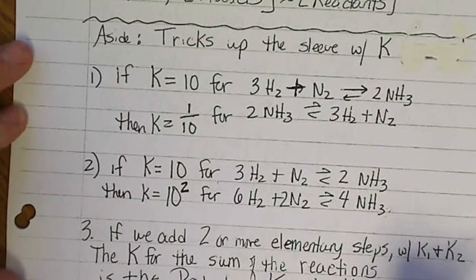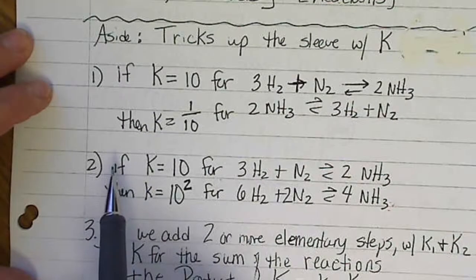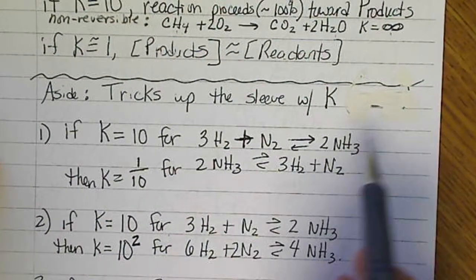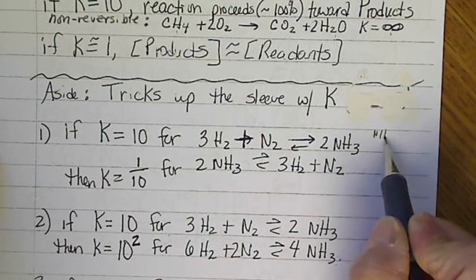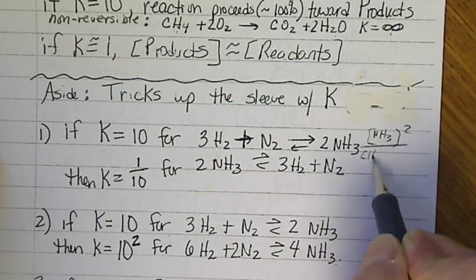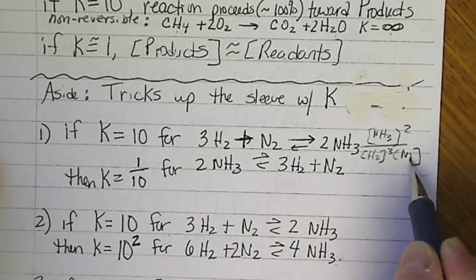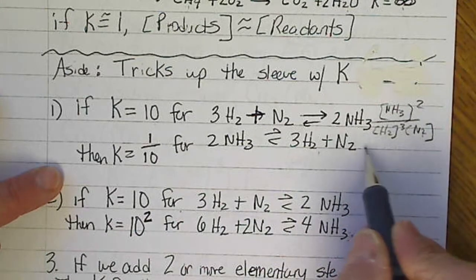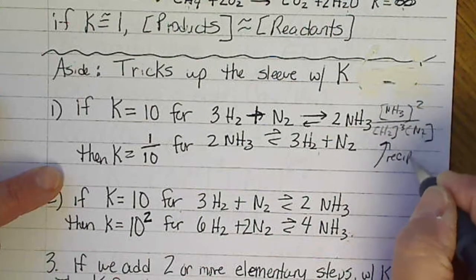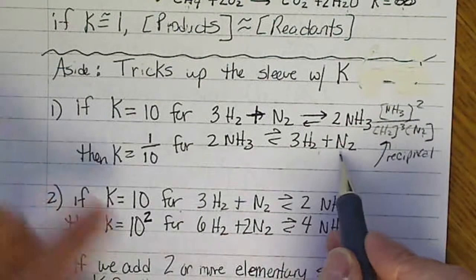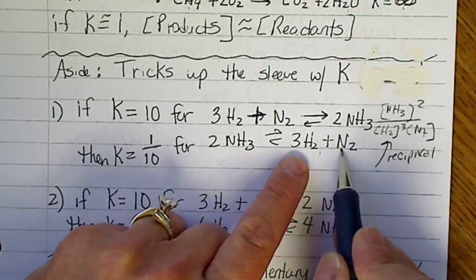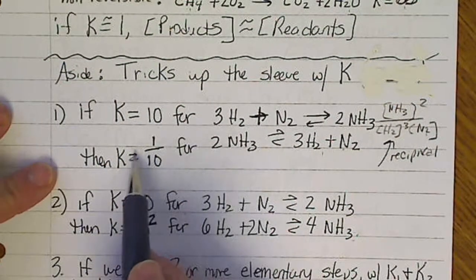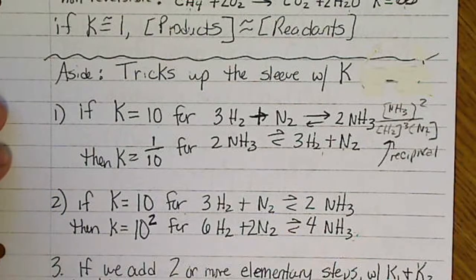Some tricks with K really make sense if we look at the reaction. For example, if K equals 10 for the reaction written with ammonia in the numerator and H2 and N2 in the denominator, the K value for the reverse reaction is just the reciprocal of this equilibrium constant. Written in reverse, hydrogen and nitrogen are in the numerator and NH3 is in the denominator, so the new K value is 1/10.